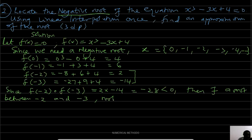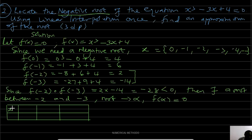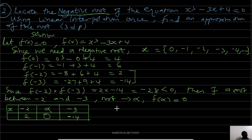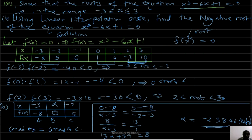Now we know the root lies between -2 and -3. Let our root be alpha; then f(alpha) = 0. We extract our table: x values are -2 and -3 with f(-2) = 2 and f(-3) = -14, and the corresponding f(alpha) = 0.